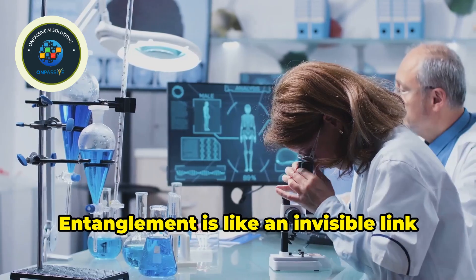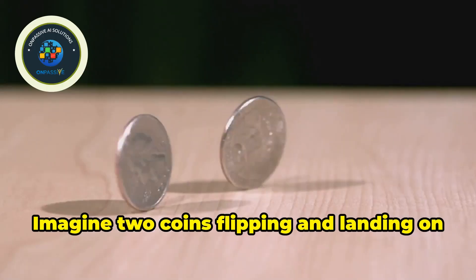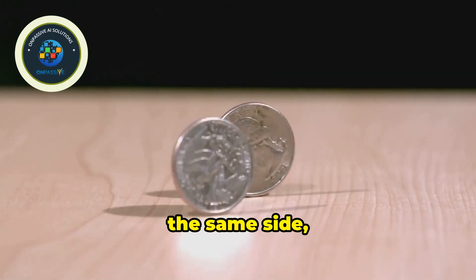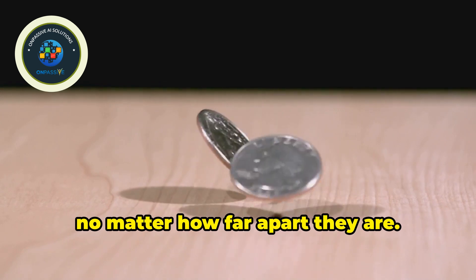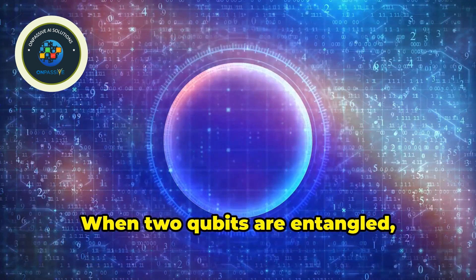Entanglement is like an invisible link between two qubits. Imagine two coins flipping and landing on the same side, no matter how far apart they are. When two qubits are entangled, they share a fate.